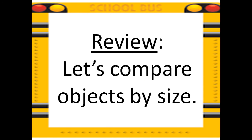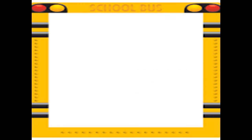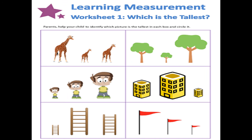Before we move on, let's review our previous lesson. Let's compare objects by size. I want you to identify the tallest in each set of pictures. Let's circle the tallest in each set of pictures. Remember, last week we discussed the size tallest — the tallest has the greatest height. Okay, are you ready? Let's start with this one.